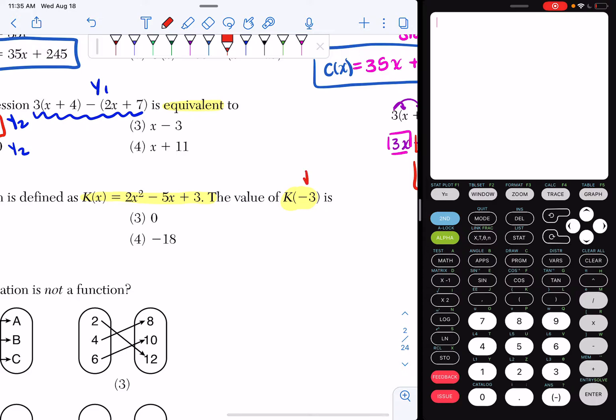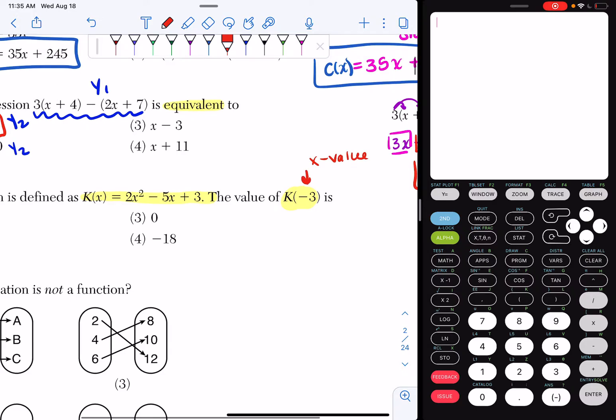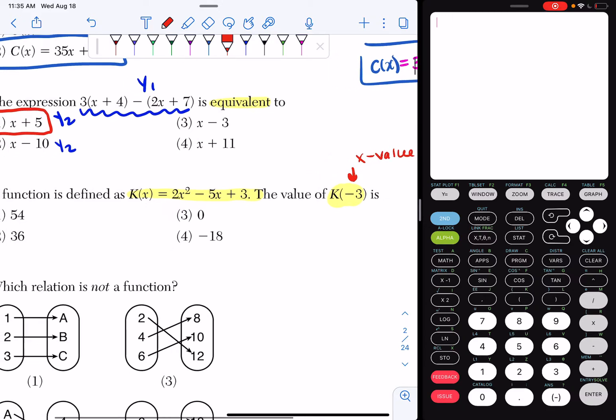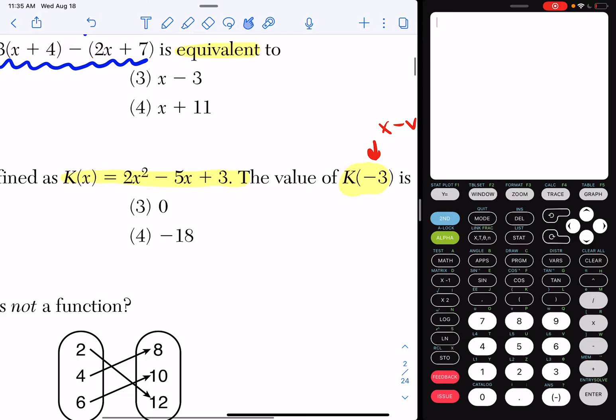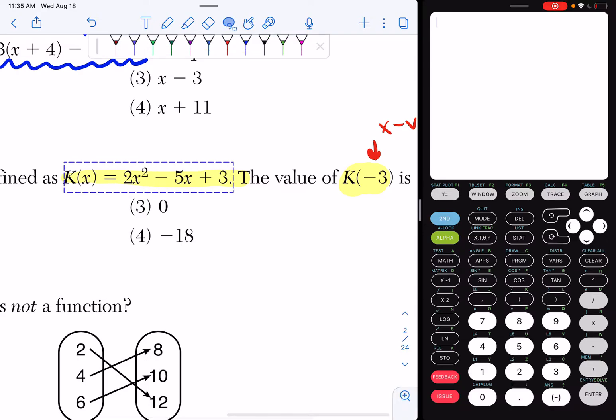Remember, this negative 3 is an x value. What you really want to do is find out what your y value is, so I want to find out what happens at x equals negative 3. So everywhere I see an x, I'm literally going to substitute a negative 3.